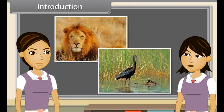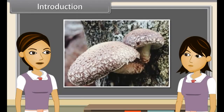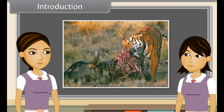We know that animals are heterotrophic and hence they depend on other organisms for their food. Animals need an external source of food. We can also say that they depend upon ready-made food, and this may come either from plants or from other animals.